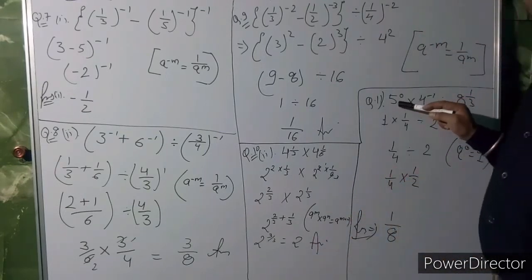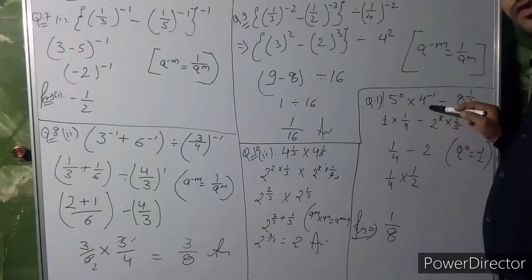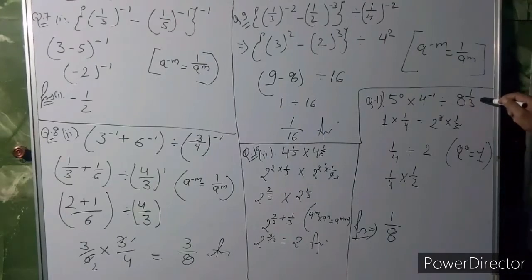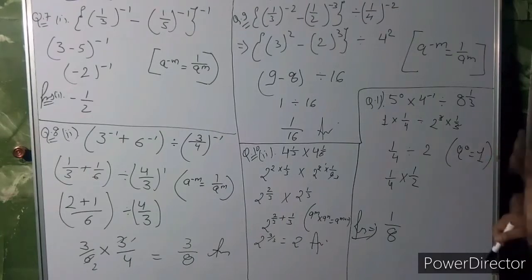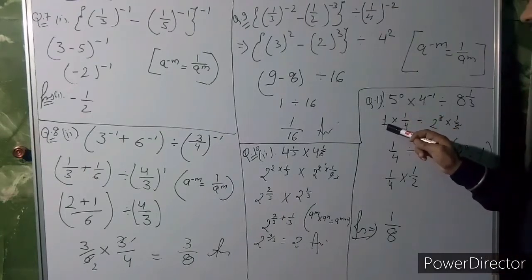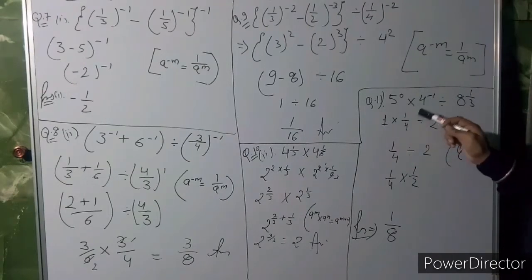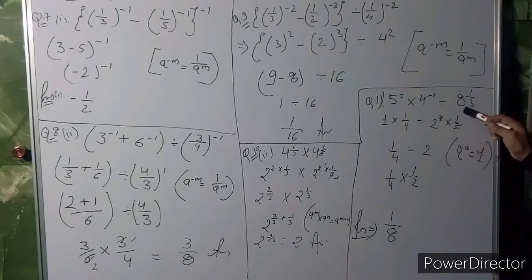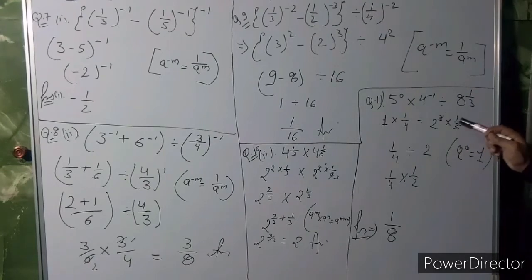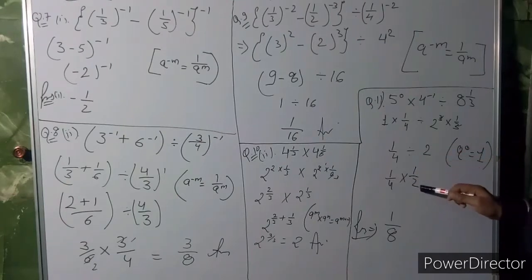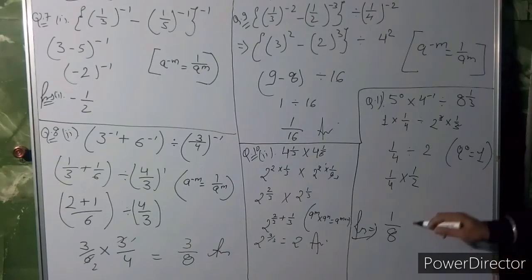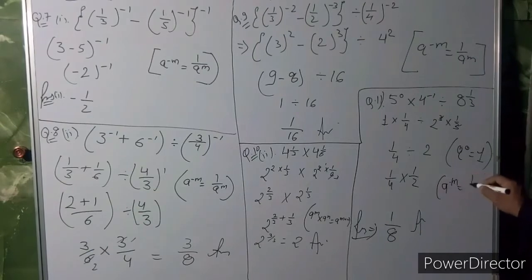Fifth question: 5⁰ × 4⁻¹ divided by 8^(1/3). First, by the law a⁰ = 1, 5⁰ = 1. Then 4⁻¹ becomes 1/4. Now write 8 as 2×2×2 = 2³, so 8^(1/3) = (2³)^(1/3) and the 3s cancel giving 2. So the answer is 1/4 ÷ 2 = 1/4 × 1/2 = 1 upon 8. In this we used the zero-exponent law and the negative-power law.